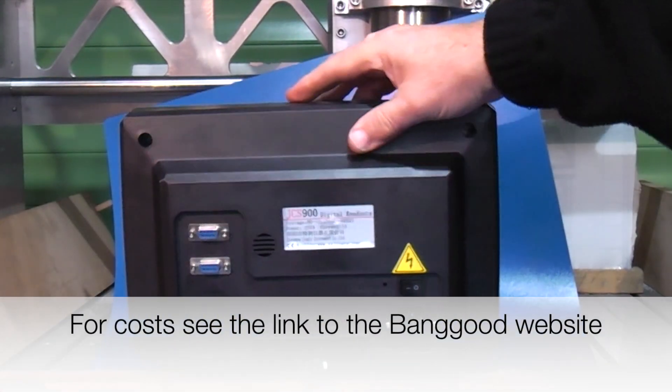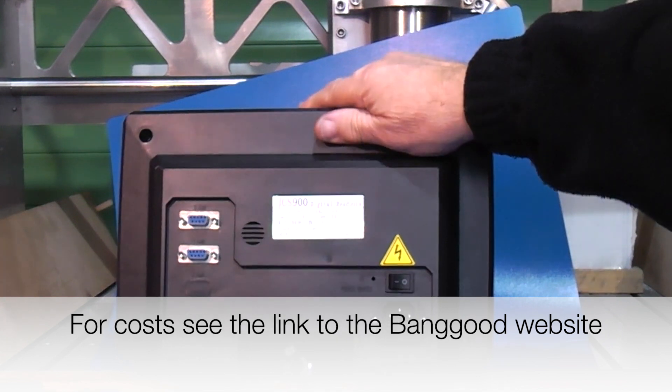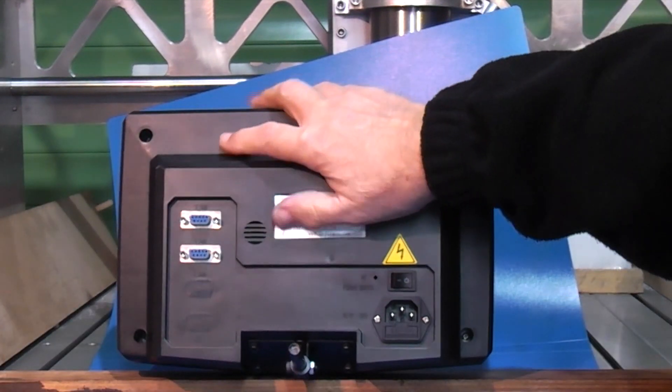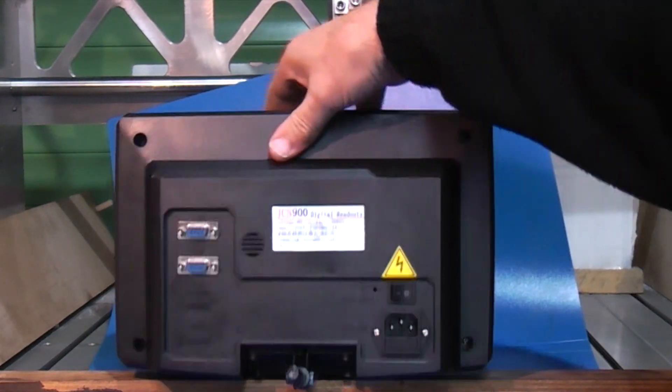We'll turn it round. On the back you have your on-off switch, the plug for your power supply, and the two sockets for the X and Y axis.